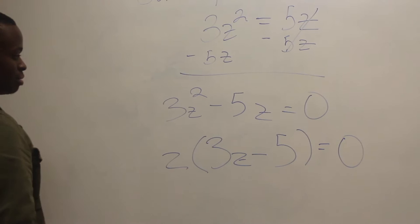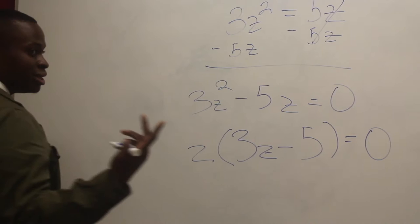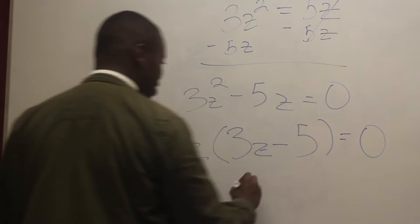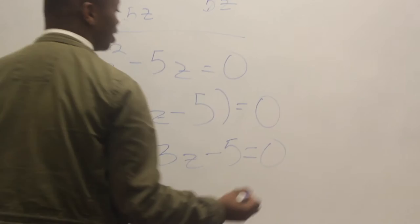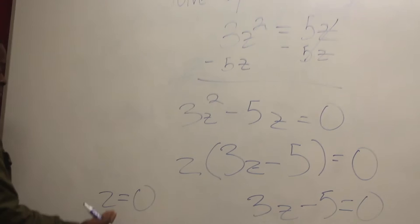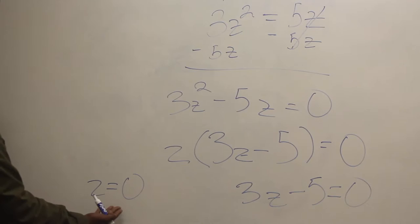From here, you see the problem is in simplest form, and what you do now is set your two new equations equal to zero: Z equals zero, and three Z minus five equals zero. For the first one, you don't have to do anything because you already have Z on one side and zero on the other — so Z equals zero is pretty self-explanatory.